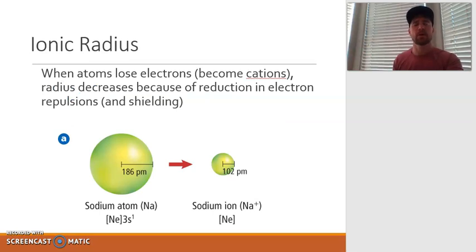Since we've been talking about the size of atoms, it's a good opportunity for us to talk about the size of ions as well. Recall that atoms sometimes will gain or lose electrons to become like noble gases, and when that happens they create ions. Specifically, when an atom loses electrons, meaning it becomes a cation or a positive ion, the radius will decrease because of the reduction in electron repulsions and shielding.